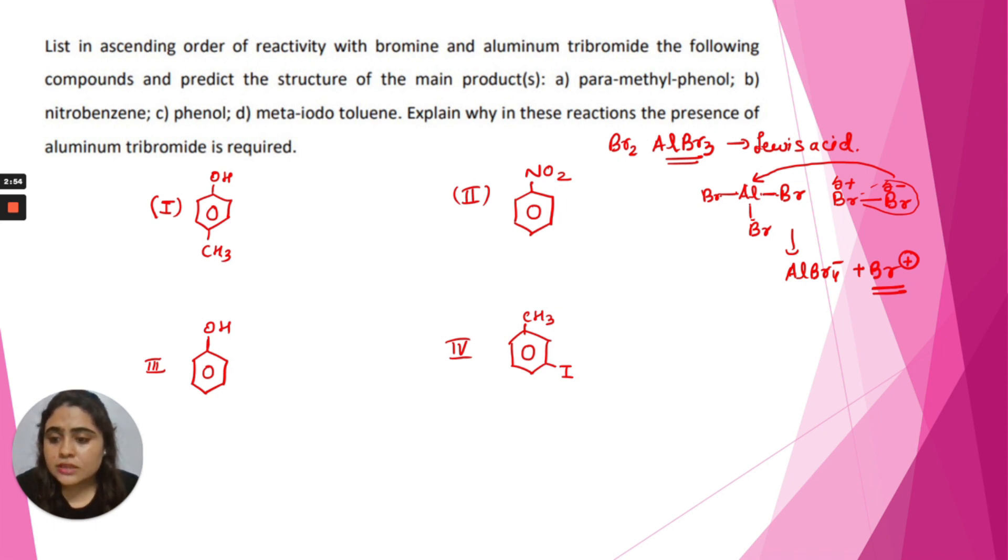In the first product, this CH3 is an ortho and para-directing group. So the bromonium ion will attack this compound at the ortho and para position, but at the para position we have a hydroxyl group.